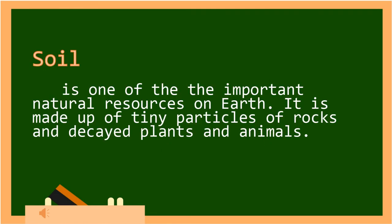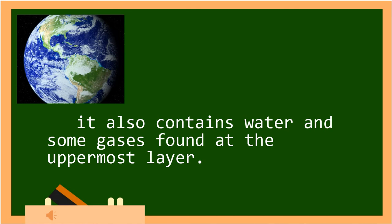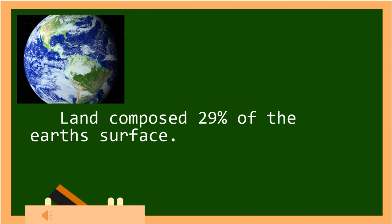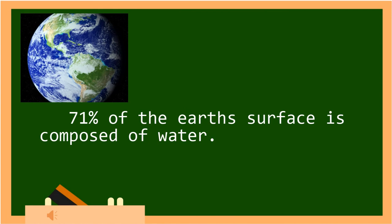Soil is one of the important natural resources on Earth. It is made up of tiny particles of rocks and decayed plants and animals. It also contains water and some gases found at the uppermost layer. Land is composed of 29% of the Earth's surface, while 71% of the Earth's surface is composed of water.